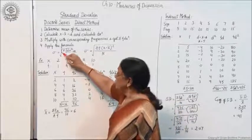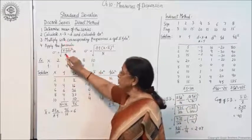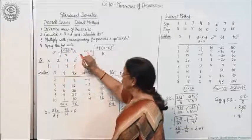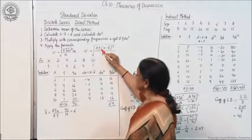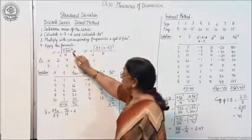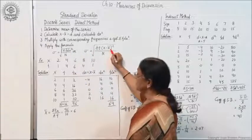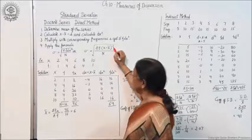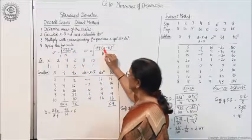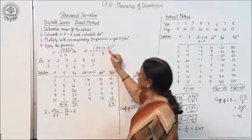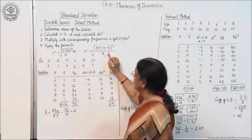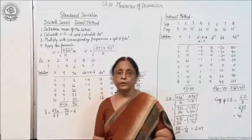After getting sigma f·dx², apply the formula. Standard deviation equals the square root of sigma f·dx² divided by n, where n is the total number of frequencies, or sigma f. So the formula under the root is: standard deviation equals square root of sigma f·(x minus x-bar)² upon n. Since dx is x minus x-bar, sigma f·dx² upon n will give you the standard deviation.